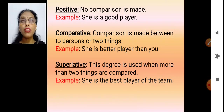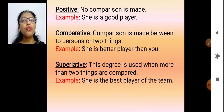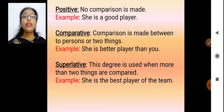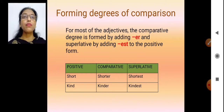In comparative, we are doing a comparison but that's between only two things or two persons. For example, she is a better player than you — I'm comparing a girl with you, so there's a comparison between two people. In superlative, we are comparing more than two. For example, she is the best player of the team — out of the whole team, all the players, she is the best. That's superlative.